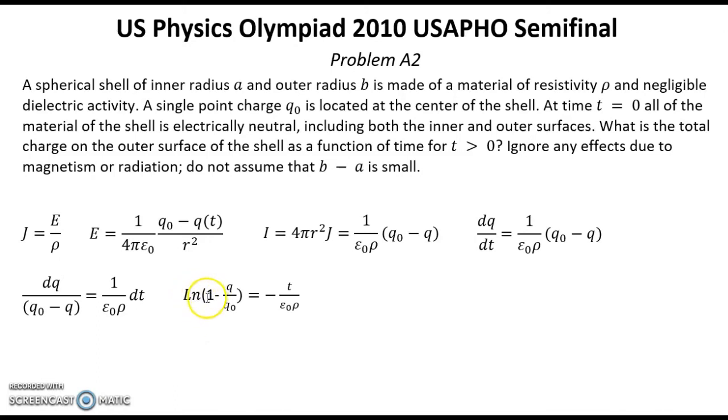Logarithm of 1 minus Q over Q0 equals negative t over epsilon 0 ρ.